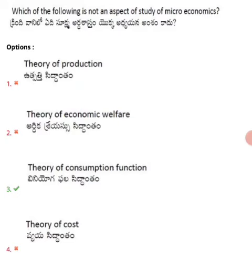Option one: theory of production. This concept is completely related to microeconomics — what is production, how much to produce, what kind of factors need to be used, the production function. All of these come under microeconomics.